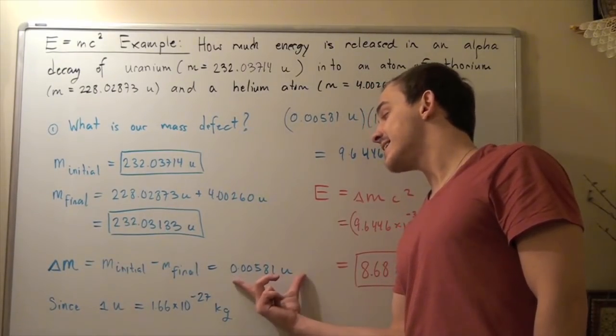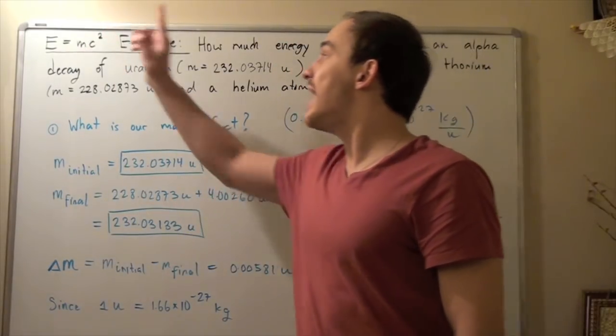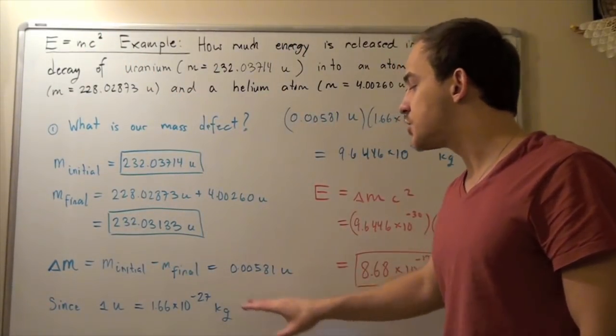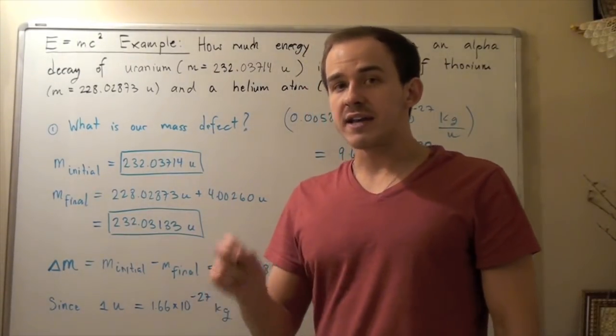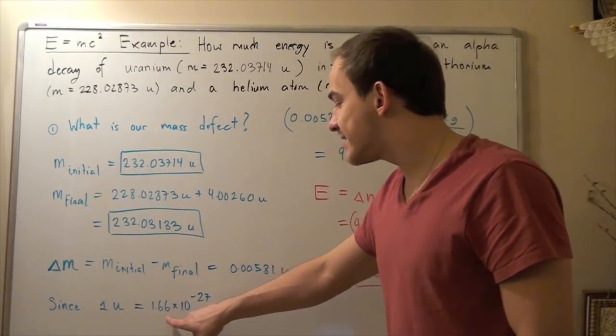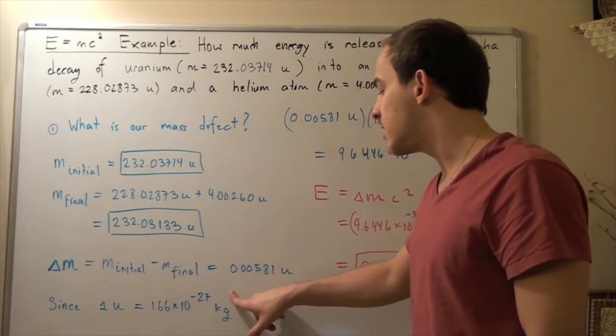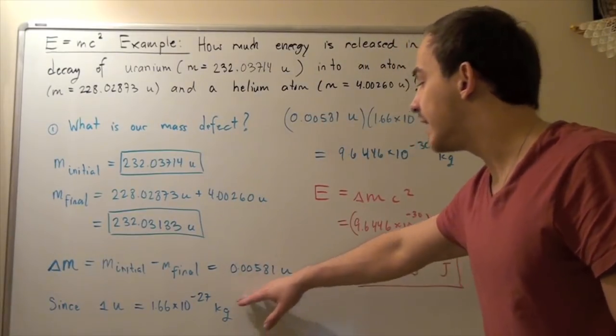Before we can take this and plug this into our equation to find our energy, we have to convert this into kilograms. Now, recall that one unified atomic mass unit is equal to 1.66 times 10 to the negative 27 kilograms. That means, in order to convert this into kilograms, we simply multiply the two out.